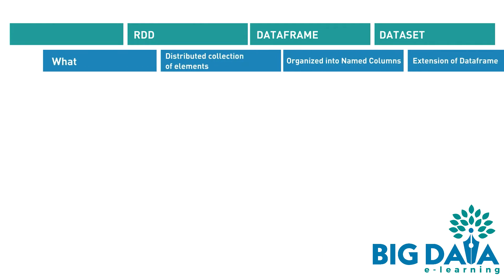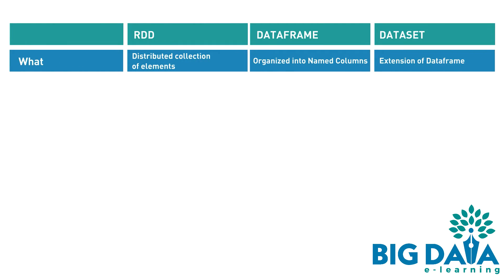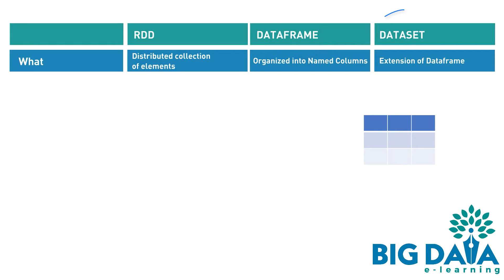Let's start with the first one. One: both RDD and DataFrame are a distributed collection of elements. However, in DataFrame, the data is organized into named columns. It is conceptually equivalent to a table in RDBMS. DataSet is an extension of DataFrame.